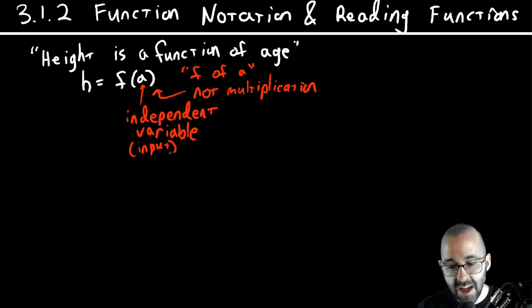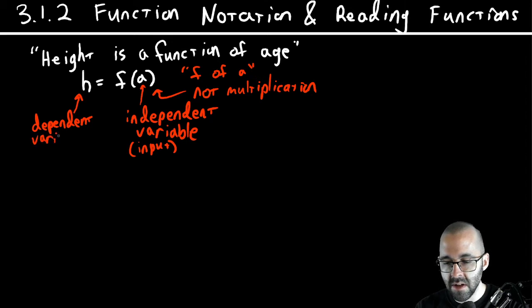And then h is the dependent, it's the output. The dependent variable, also known as the output.